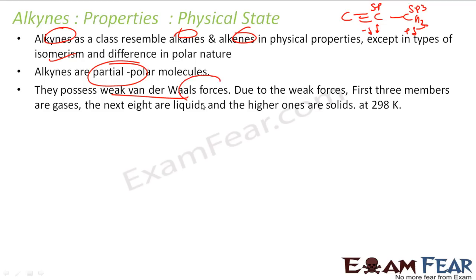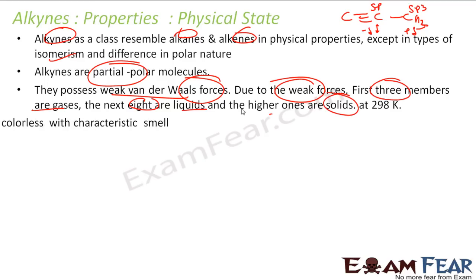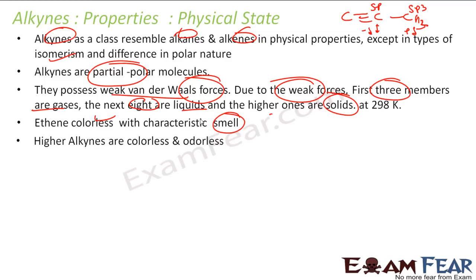They also have van der Waals forces. The first three alkynes are gases, the next eight are liquids, and the higher ones are solids at room temperature. Ethyne is colorless and has some smell, but the other alkynes are colorless and have no smell.